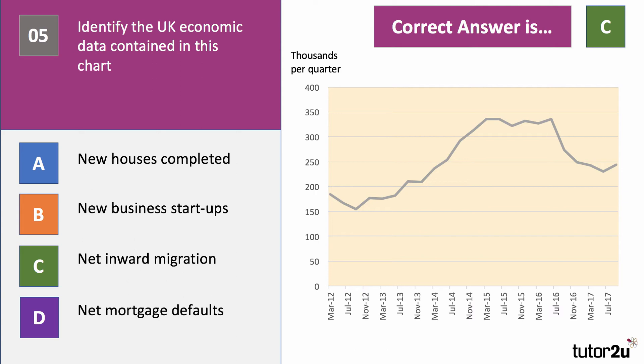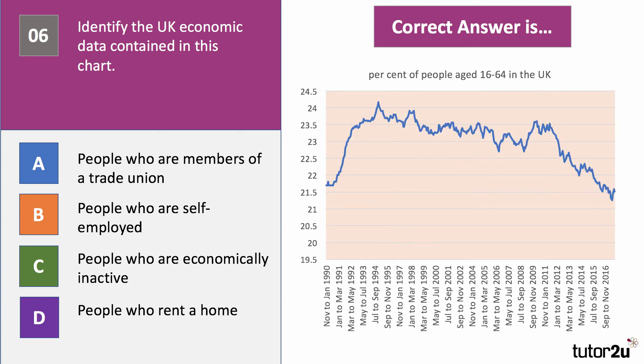We're halfway through. Chart number six: identify the economic data contained in this chart. Crucially, the data is a percentage of people aged 16 to 64 in the UK. Is it people who are members of a trade union, people who are self-employed, people who are economically inactive, or people who rent a home instead of buying? The figures have come down from about 24% to about 21% over this period. What do you think?